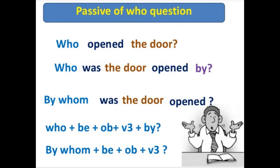However, questions which begin with 'who' have some different forms — we get two structures. The first begins with 'who' followed by 'be + object + third form of the verb + by.' Alternatively, we can write 'By whom + be + object + verb third form.' For example, 'Who opened the door?' can be written as 'Who was the door opened by?' or 'By whom was the door opened?'